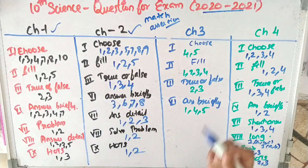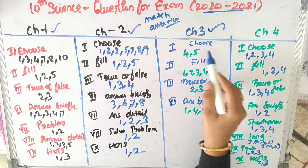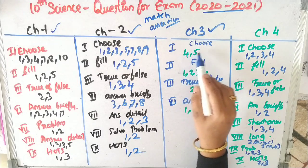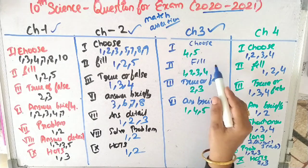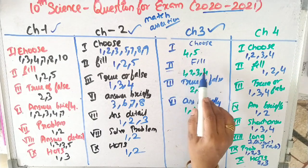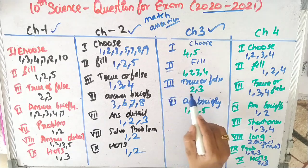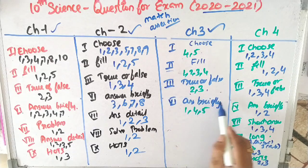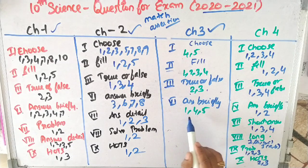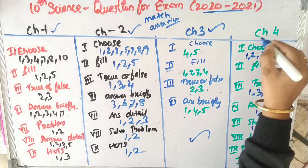In chapter 3, first Roman numeral: questions 4 and 5. Second Roman numeral: questions 1, 2, 3, 4. Third Roman numeral: questions 2 and 3. Sixth Roman numeral: questions 1, 4, 5.